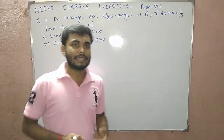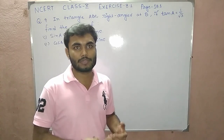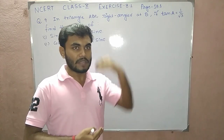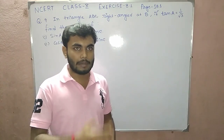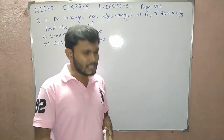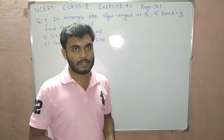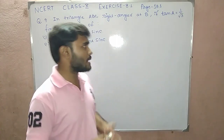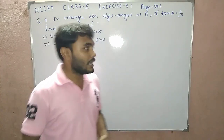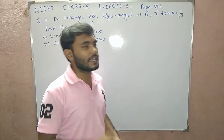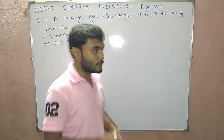I want to clarify that whenever we reach the next exercise and are comfortable with the values of the standard angles for all six trigonometric ratios, these sums will be much easier. But for now, we have to draw the right angle triangle and work through a lengthier process.